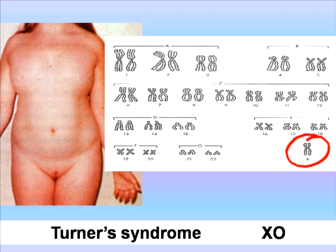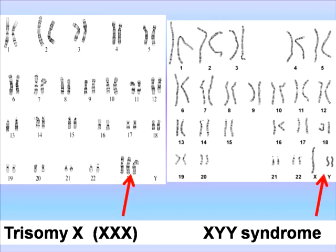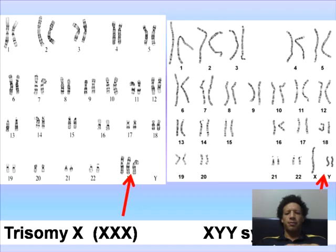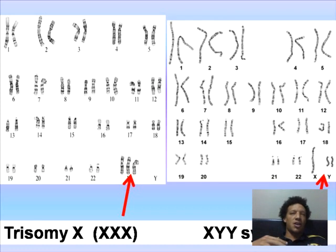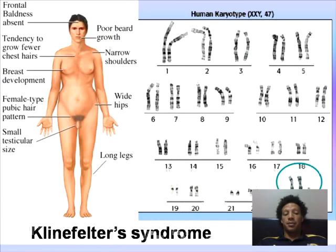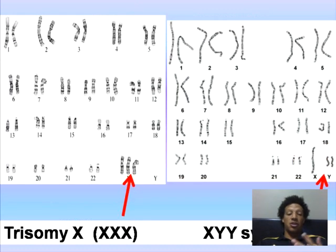Then you have XO individuals, who are missing a sex chromosome — this is called Turner's syndrome. Then you have XXX individuals, who have trisomy for the X chromosome. And you have XYY syndrome — those individuals have X and two Y chromosomes. XYY individuals commonly don't survive, and if they do, they are reportedly very aggressive and many end up in the criminal justice system. So those are further examples of aneuploidy: Down syndrome, XXY (Klinefelter's), XO (Turner's), trisomy X, and XYY.